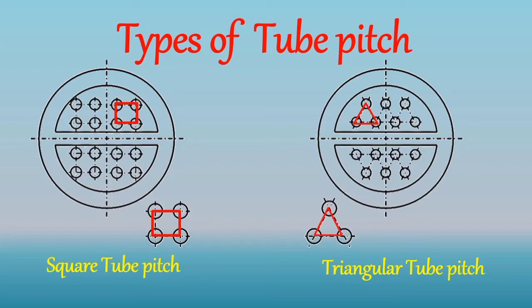The advantage of a square pitch arrangement is that it permits external cleaning of the tubes and causes a low pressure drop on the shell side fluid.